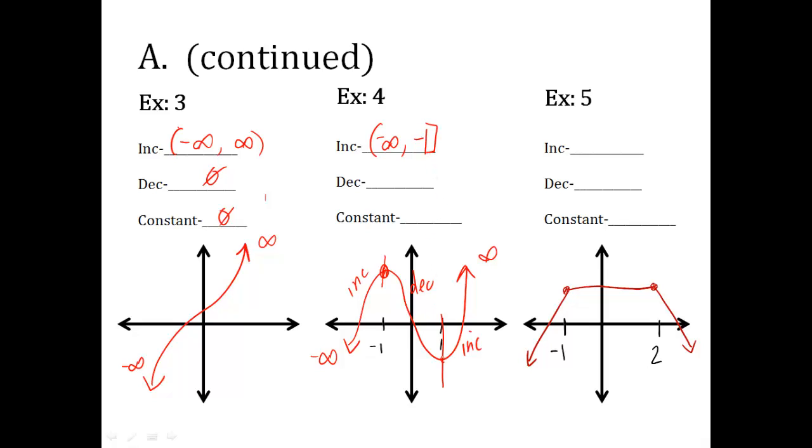Another place that it increases is where it's positive 1, where x is positive 1, to positive infinity. So I go from positive 1 to positive infinity. So there's two sections of this graph that have an increase in slope.